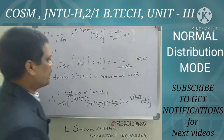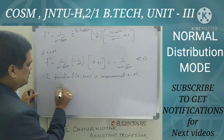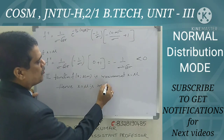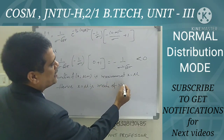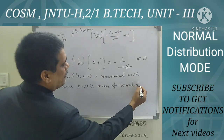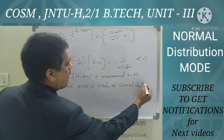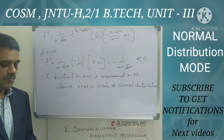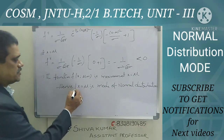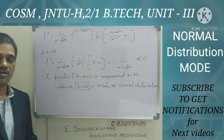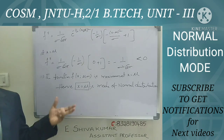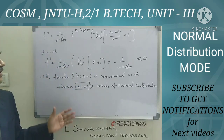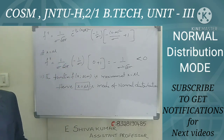Since f(x; μ, σ) is maximum at x = μ, therefore x = μ is the mode of the normal distribution. Also, recall that the mean E(x) = μ. Hence we conclude that mode equals mean — both are equal to μ for the normal distribution.